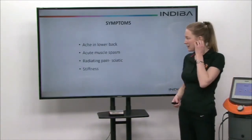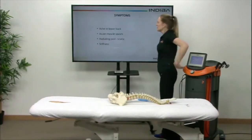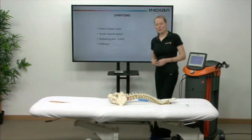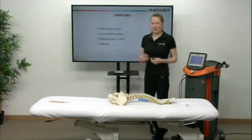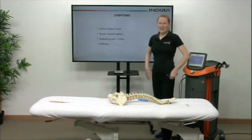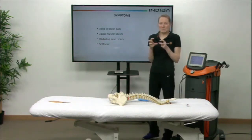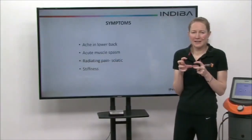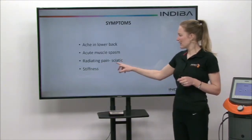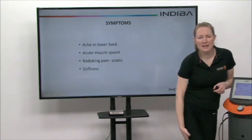Some of the symptoms of back pain include a generalized ache in the lower back, that lumbar region. We can also get acute muscle spasm — patients will report they picked something up, slightly twisted, sneezed, or coughed, and there was a sudden shoot of pain. The back goes into spasm and they can't move, as those muscles have all tightened up to protect the area. Some patients also report radiating pain, which can combine with muscle spasm — that sciatic pain tracking down the back of the leg.